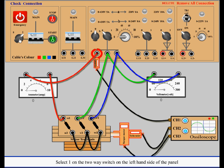Select one on the two-way switch on the left-hand side of the panel. Switch on the MCB and click the start button.